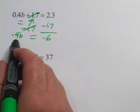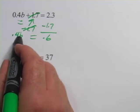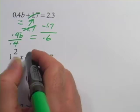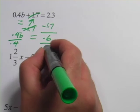So we undo that multiplication by doing the opposite of multiplication, which is dividing by 0.4. We've got to do it to both sides. I divide by 0.4.